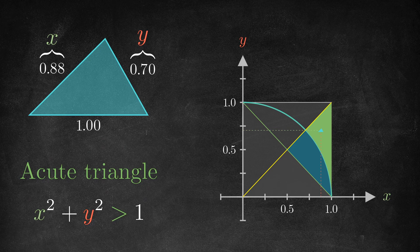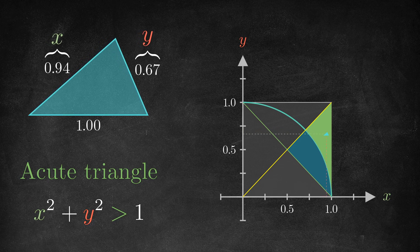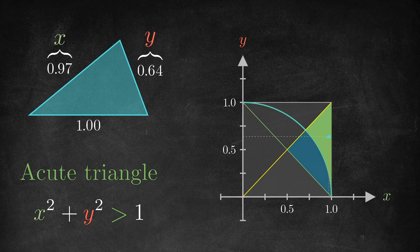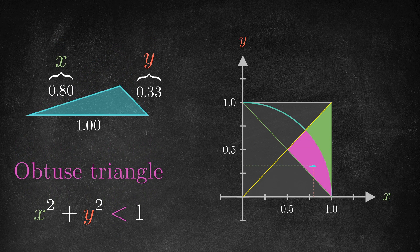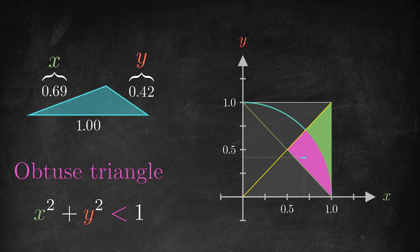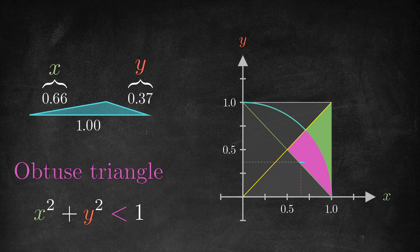Everything above that arc corresponds to an acute triangle, where all the angles are less than 90 degrees, and everything below it corresponds to an obtuse triangle, where one of the angles is bigger than 90 degrees.